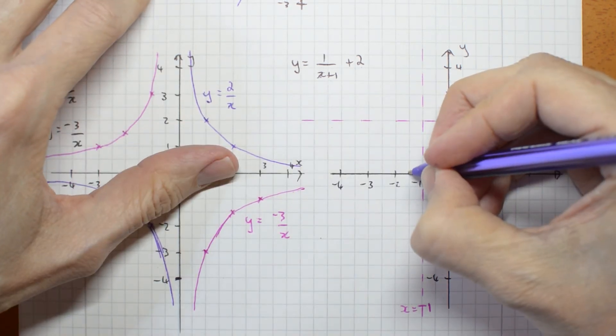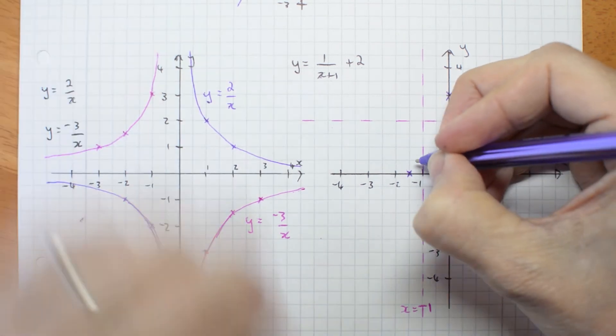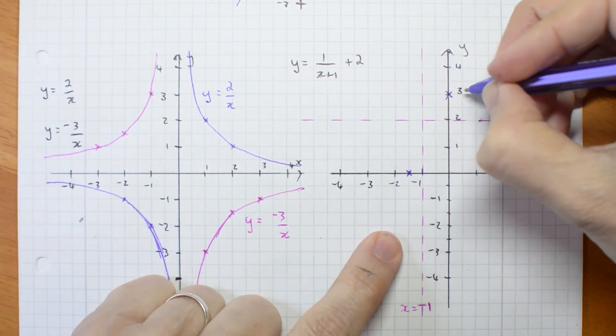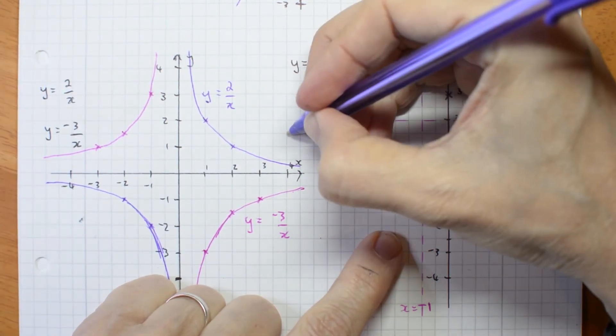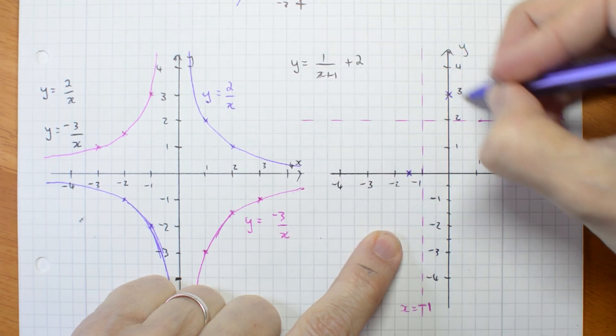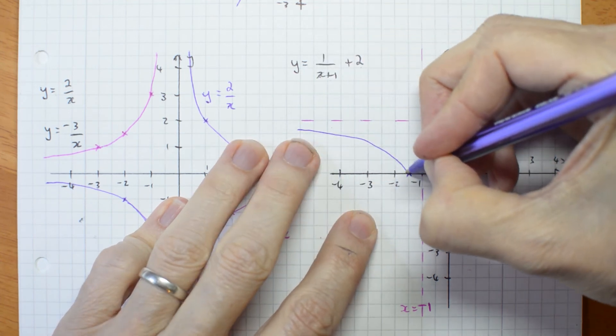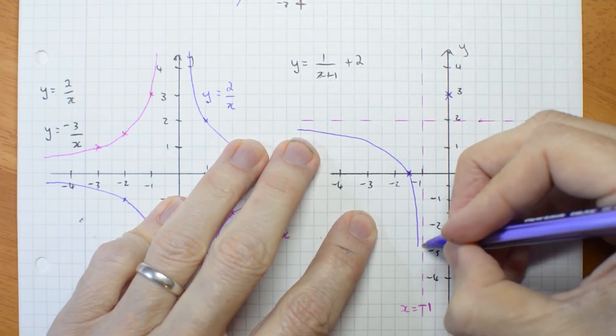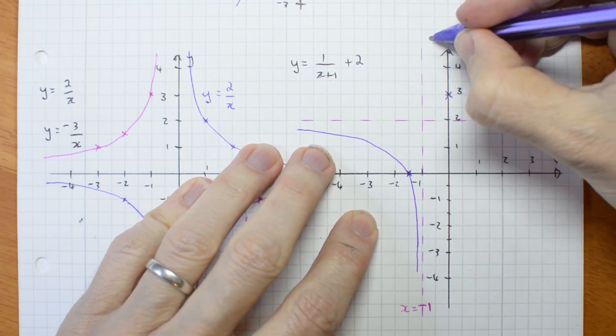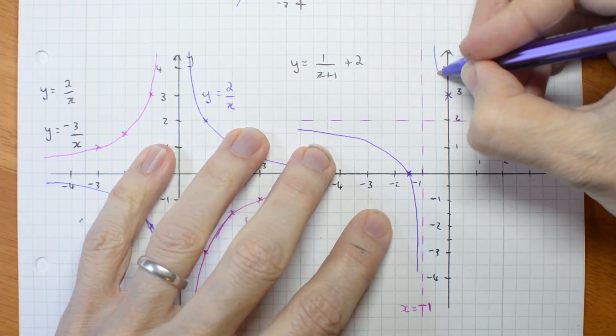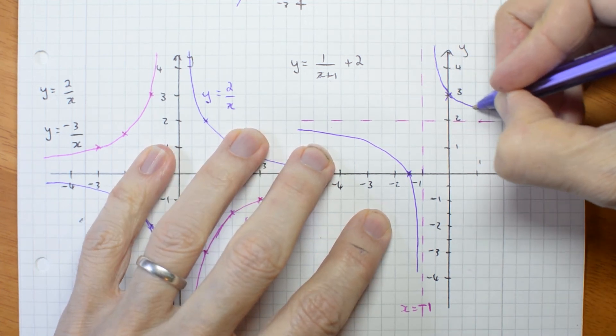So that's here. Then my curve is going to come like this and like that. Let's have a go. It goes, it keeps going. Comes down from here and goes along there.